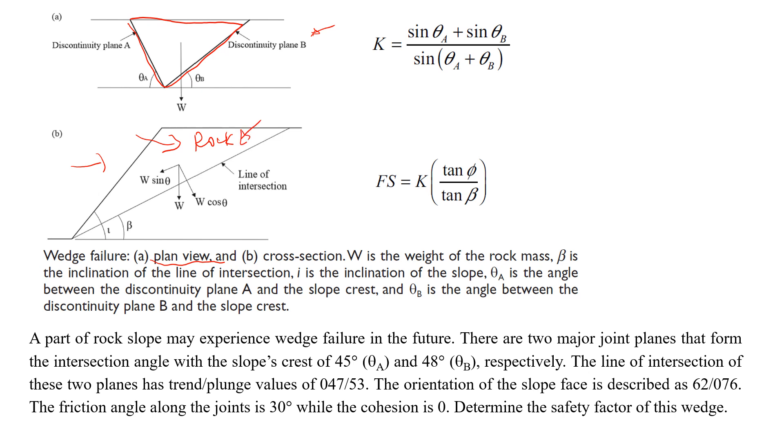This is the wedge and we have a few angles here. So let's start with this angle i, that's the angle of the slope. And this one beta, it's the angle of the failure plane.